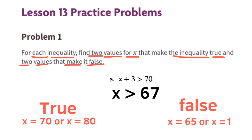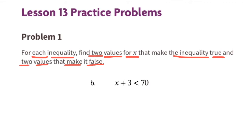Values for x that would make the inequality false would be any values that are not greater than 67 — for example, x could be 65 or x could be 1. Anything with a value that's not greater than 67.